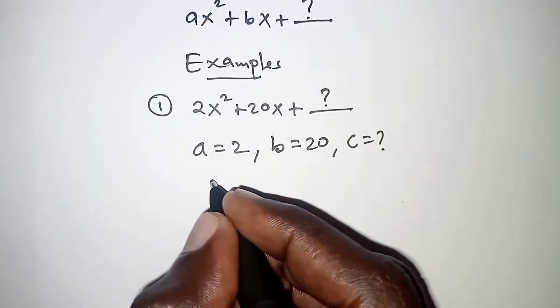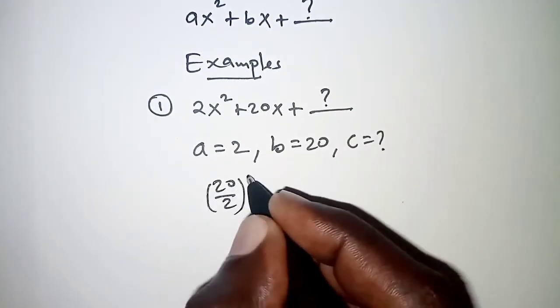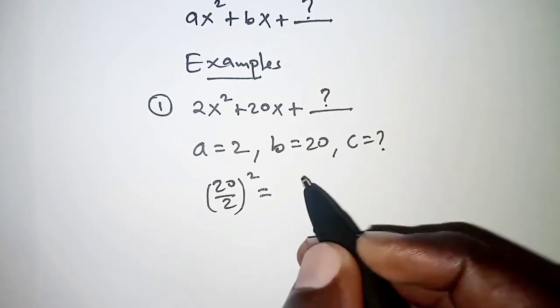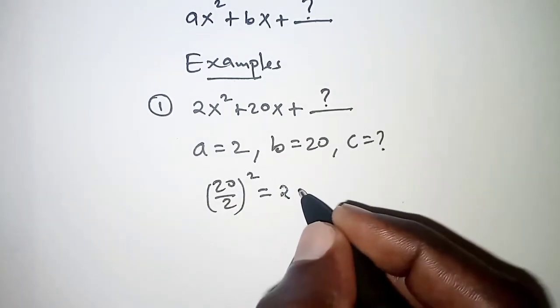So we have b/2, and b is 20, so 20 divided by 2 squared should be equal to a times c, and a is 2, so 2 times c, that is 2c.